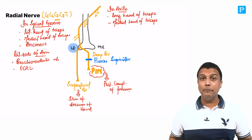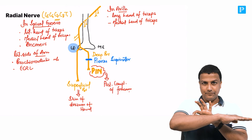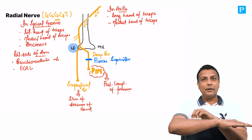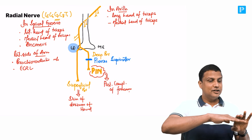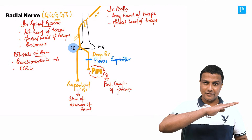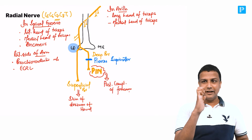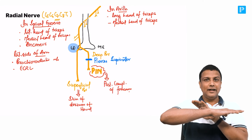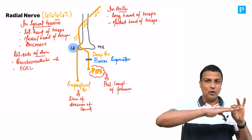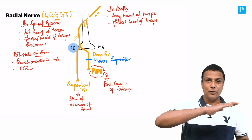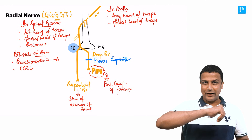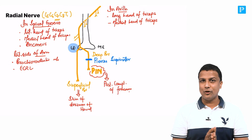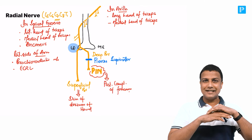Landmark three is the PIN — posterior interosseous nerve — which supplies muscles in the posterior compartment of the forearm including extensor digitorum. If PIN is gone, extensor digitorum is gone; you will not be able to extend the digits, and finger drop will occur. Landmark four: if the superficial branch is gone, there will be loss of sensation on the dorsum of the hand.